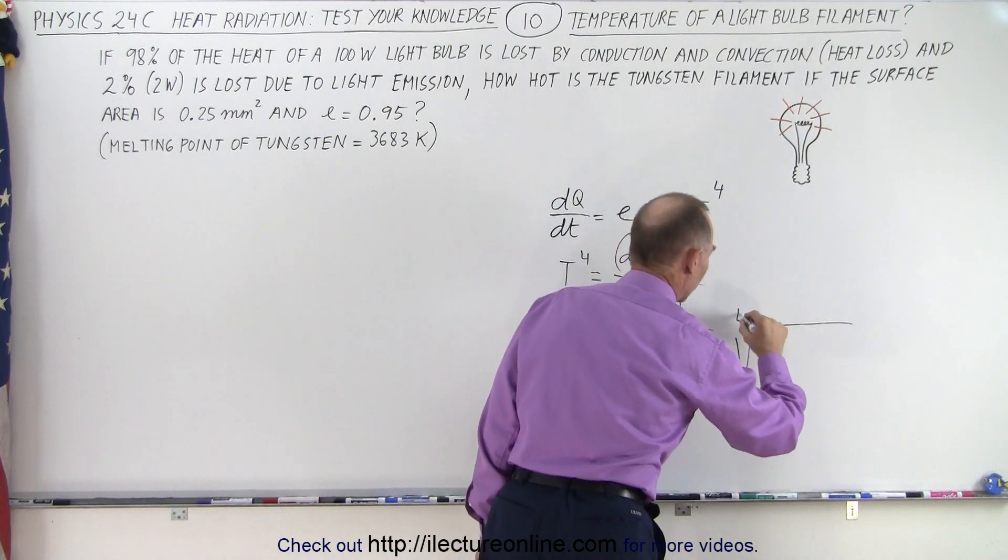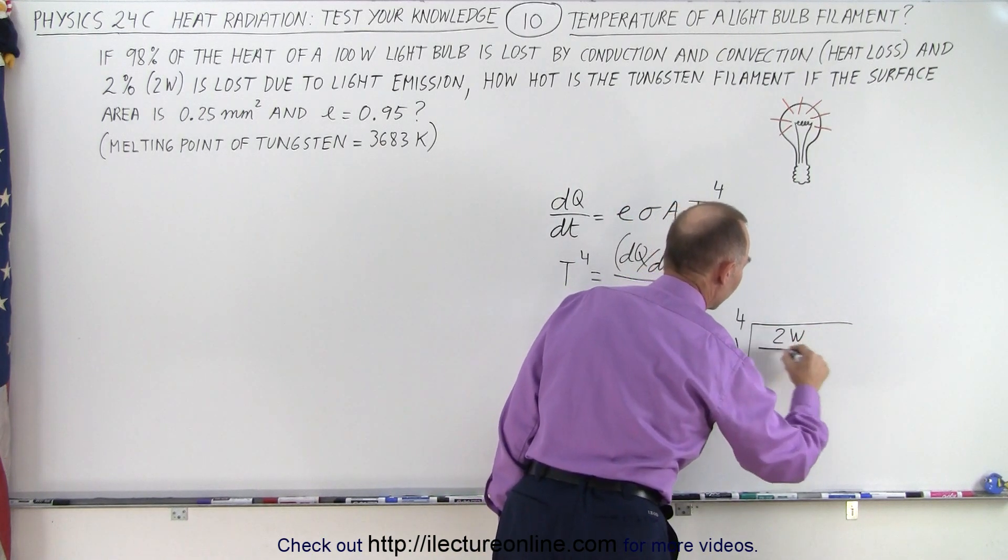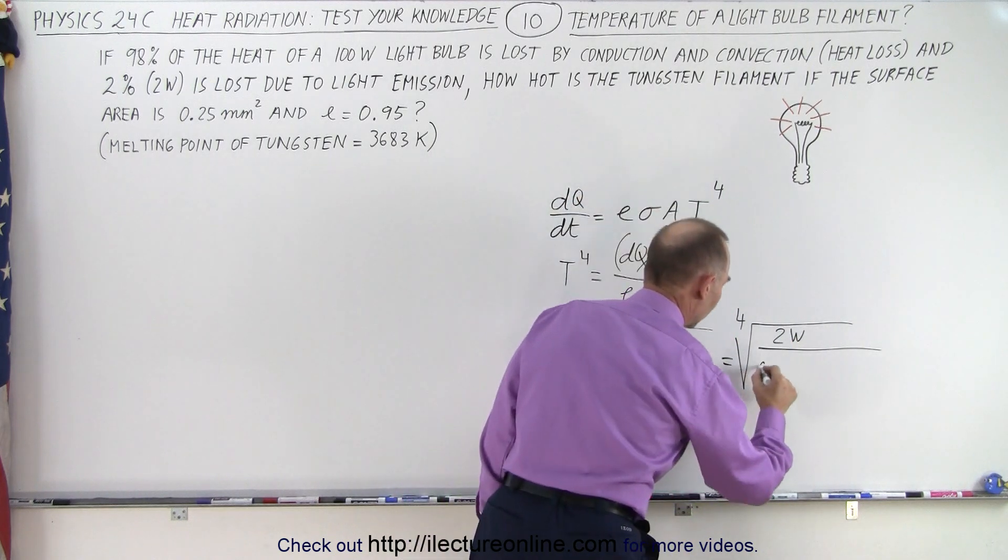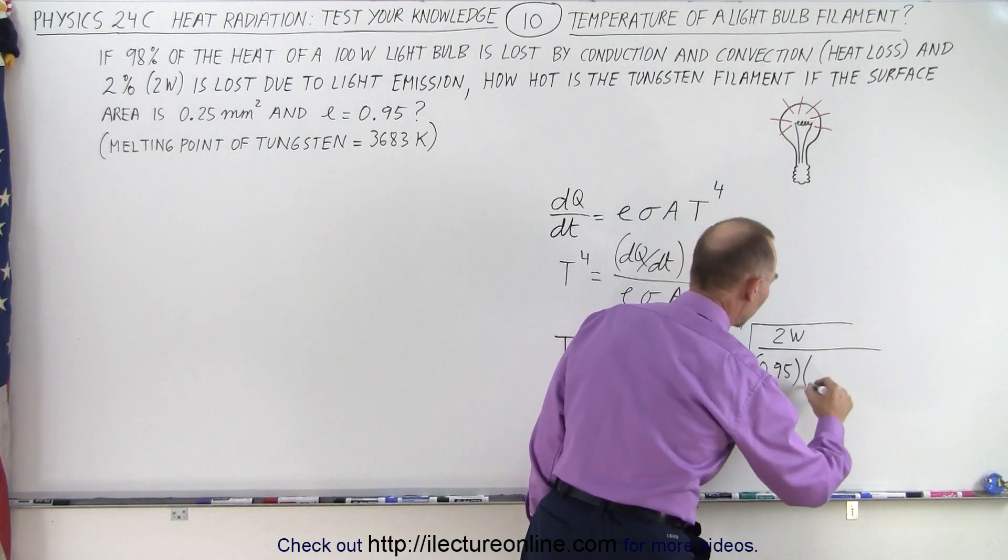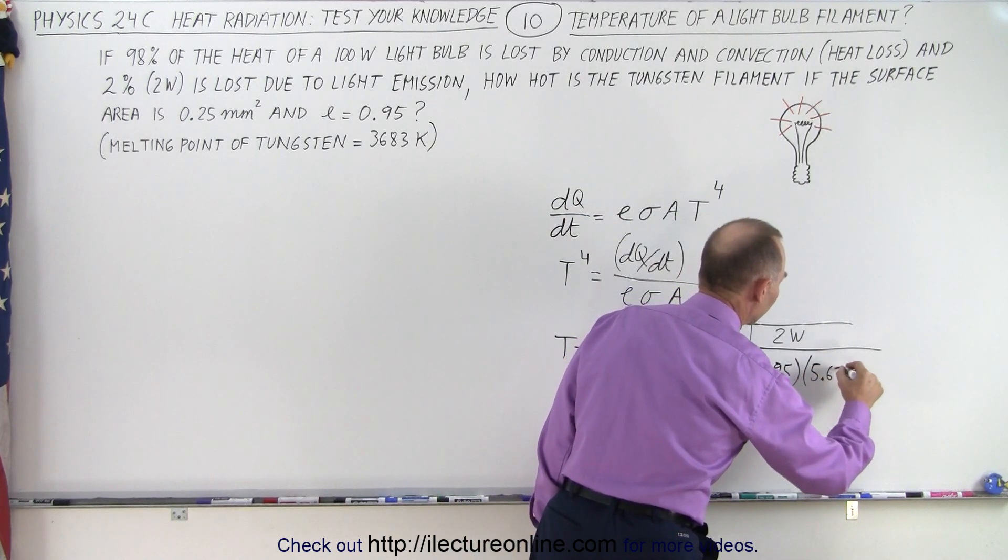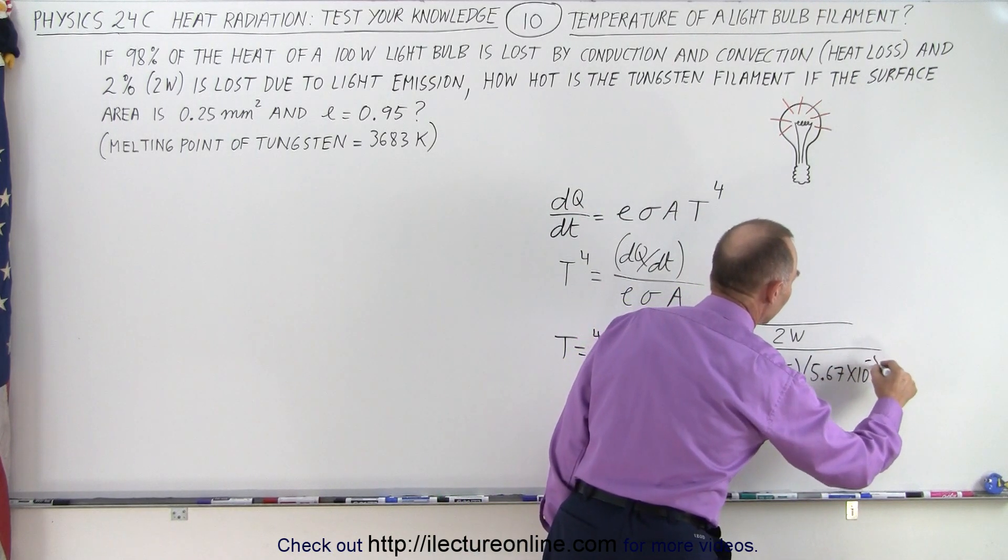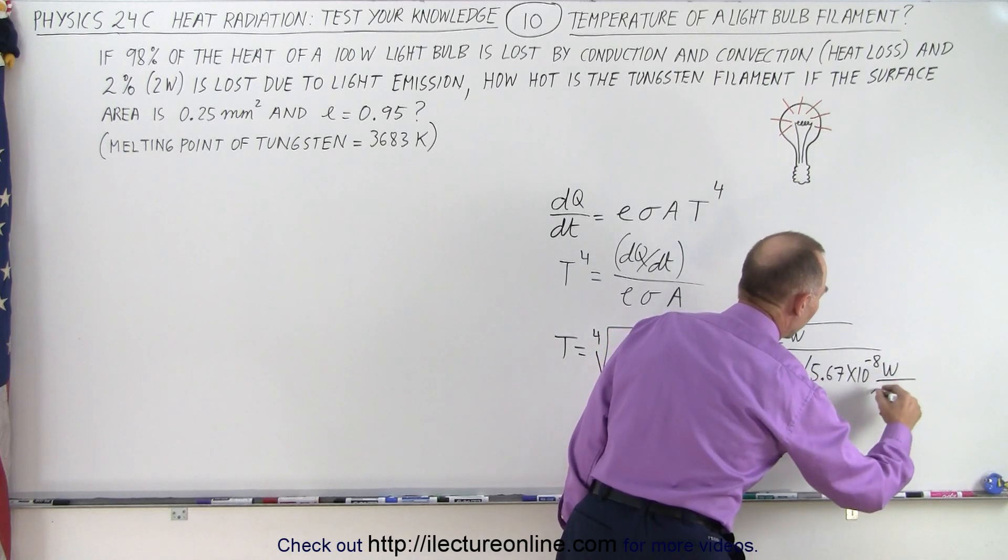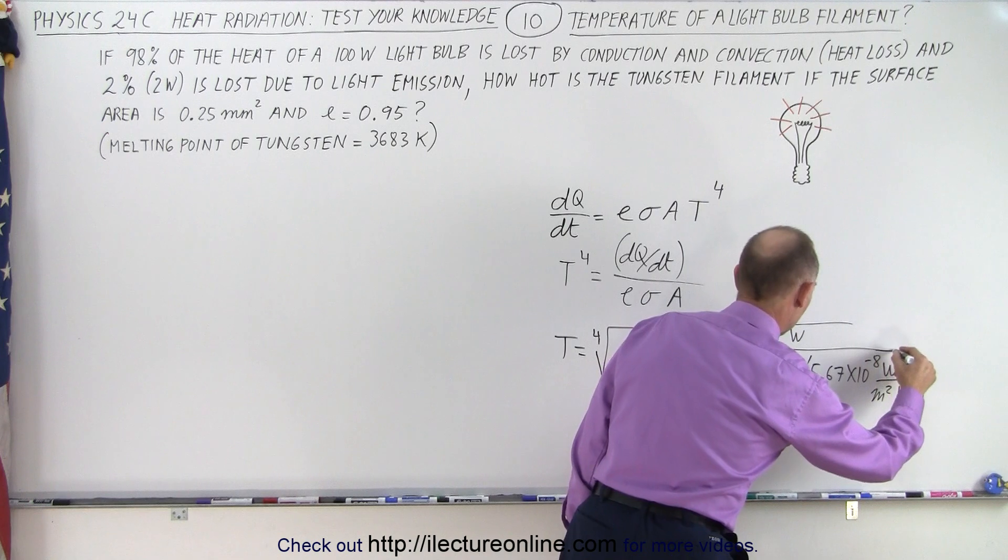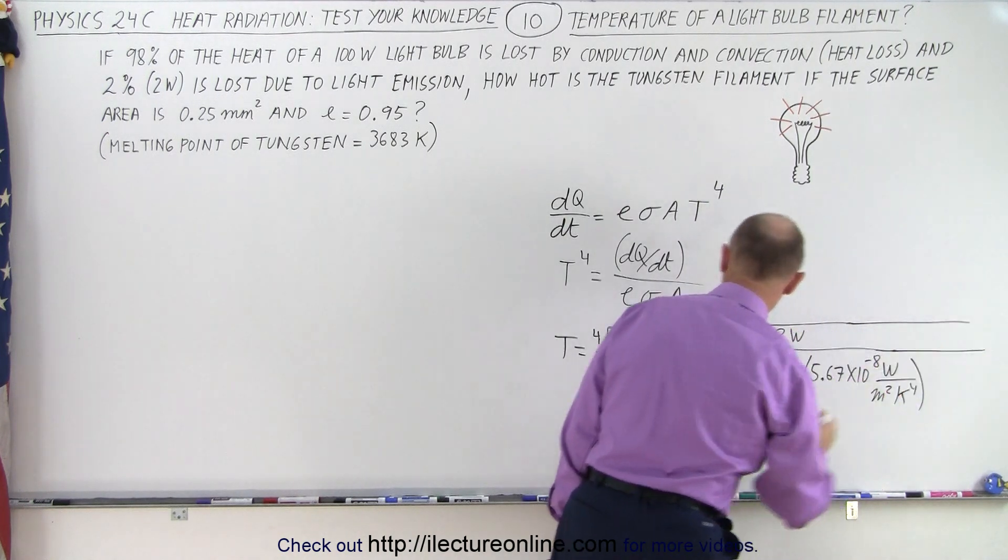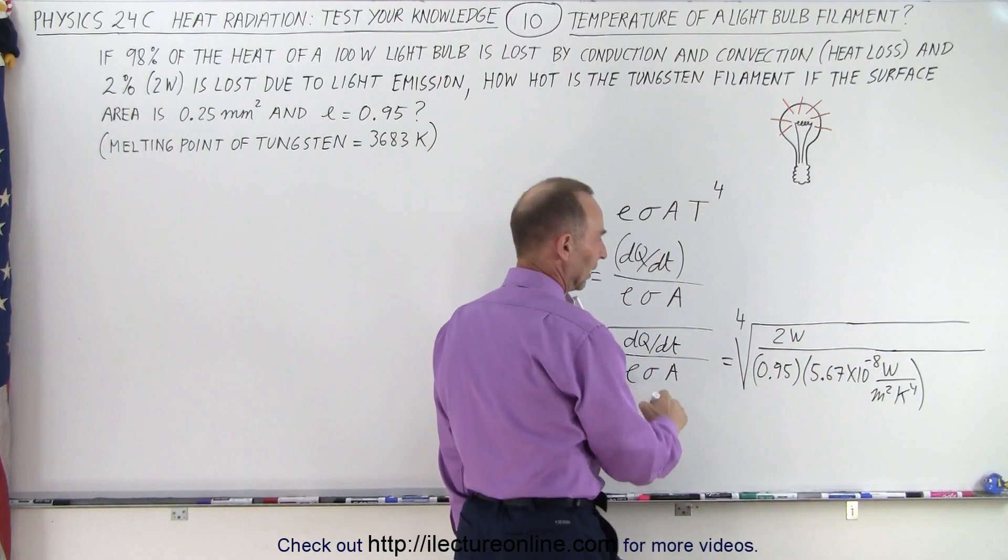Then we have σ, which is 5.67 times 10 to the minus 8—that would be watts per meter squared Kelvin to the fourth power. Let's make this a little bit longer here. And then we have the surface area.